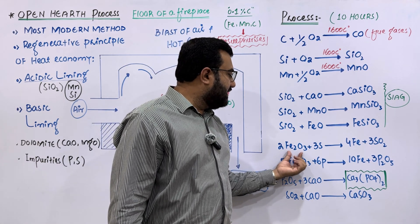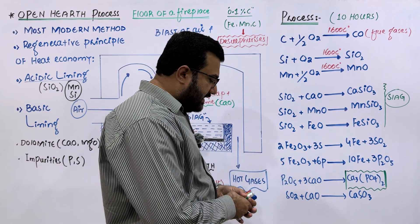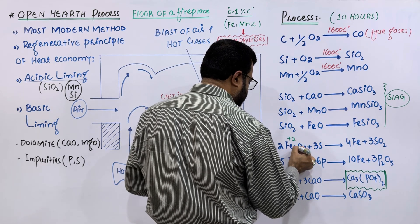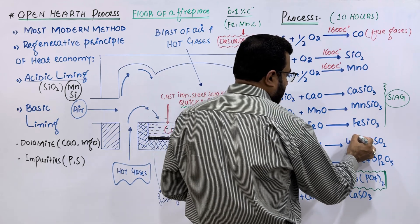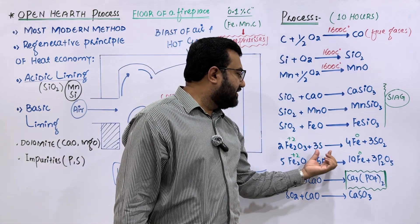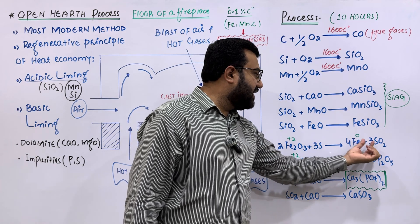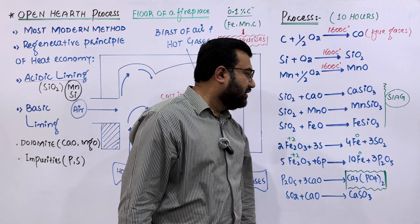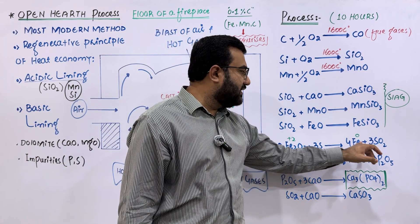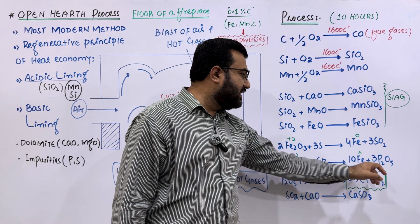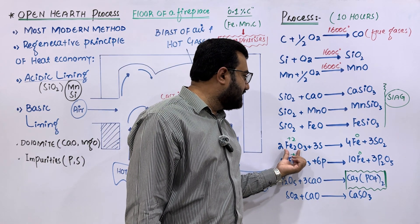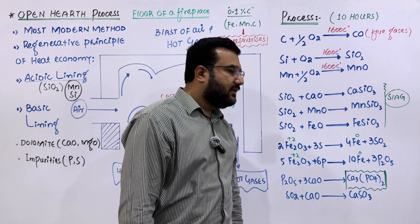The iron now gets reduced from an oxidation state of +2 to pure iron. During that reduction process, sulfur is oxidized to SO₂ and phosphorus is oxidized to P₂O₅. So the sulfur impurities are removed as SO₂ and the phosphorus impurities are removed as P₂O₅, while the iron is reduced to its metallic form.